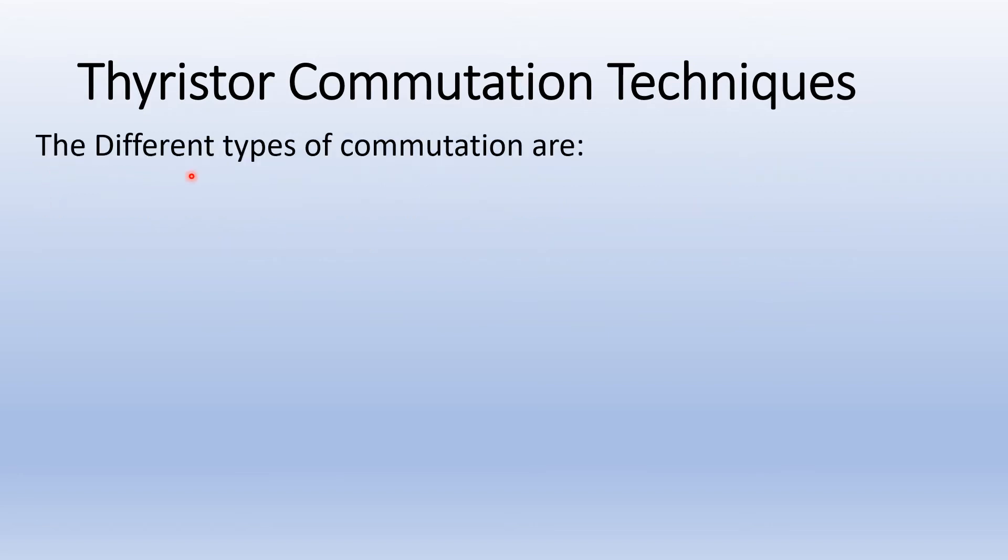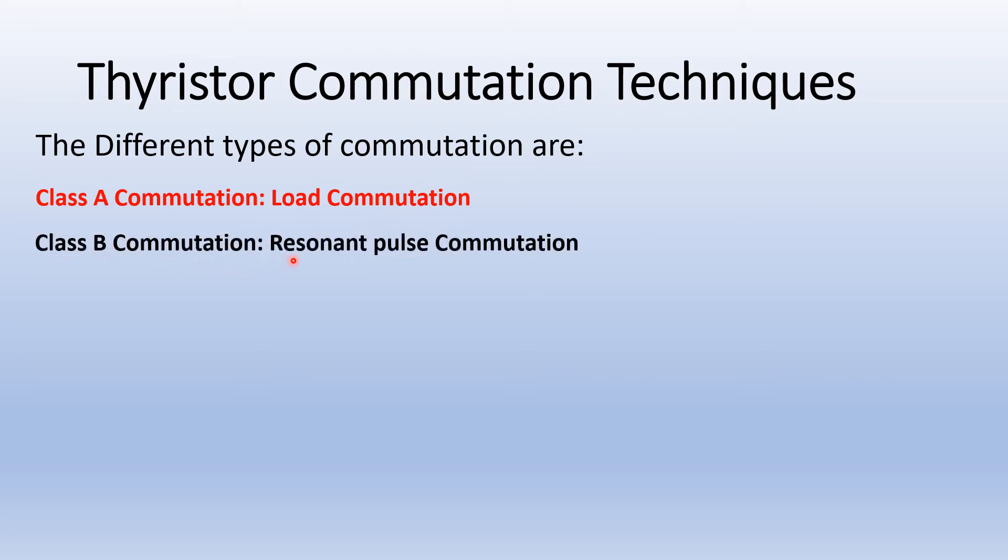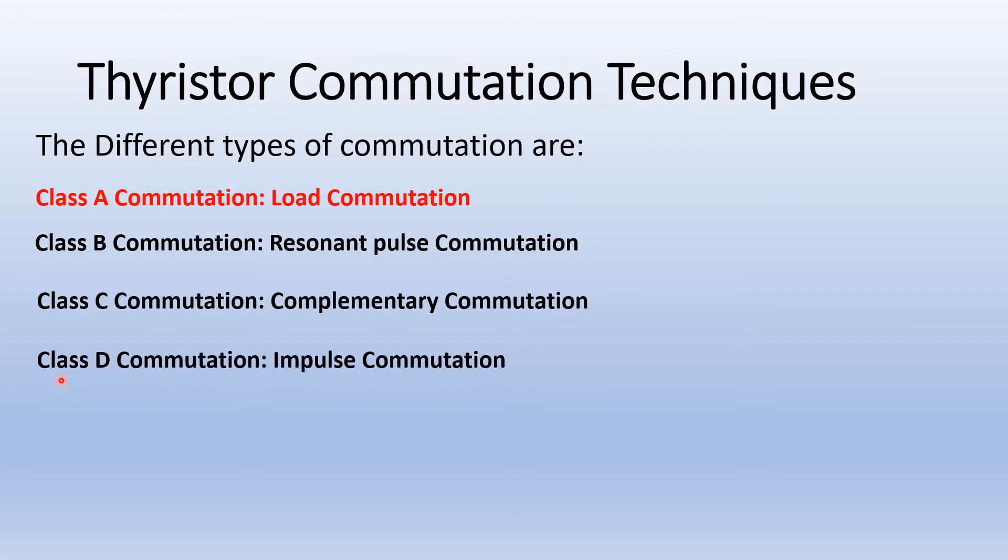The different types of commutation are Class A commutation also known as load commutation, Class B commutation also known as resonant pulse commutation, Class C commutation also known as complementary commutation, Class D commutation also known as impulse commutation, Class E commutation also known as external pulse commutation, Class F commutation also known as line commutation. We will look into Class A commutation and Class F commutation.